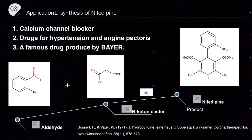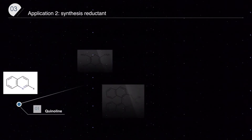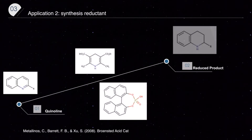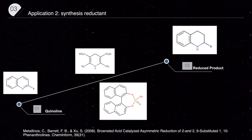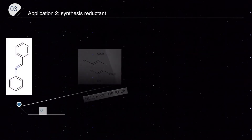Nifedipine is a famous classic drug produced by Bayer in 1975. It is a near-perfect drug with long-term effect, efficiency, and smooth effect for hypertension. In this reaction scheme, the classic synthesis uses dihydropyridine as a lead compound: an aldehyde reacts with beta-ketoester in the presence of ammonia to form Nifedipine. Another application is using dihydropyridine as a reductant — it can reduce quinidine to its reduced form with the help of phosphate, and can also reduce other double bonds in specific steric environments or under catalysis.